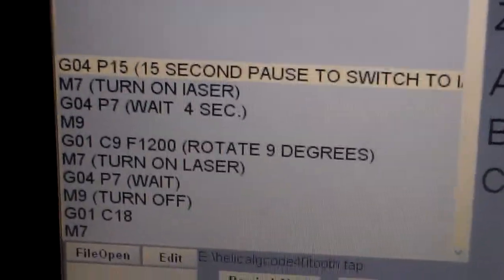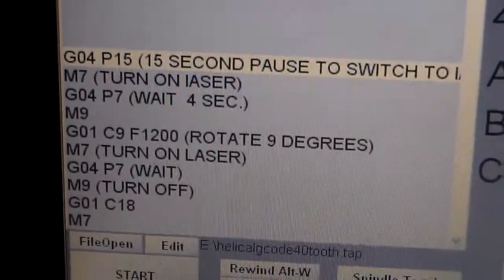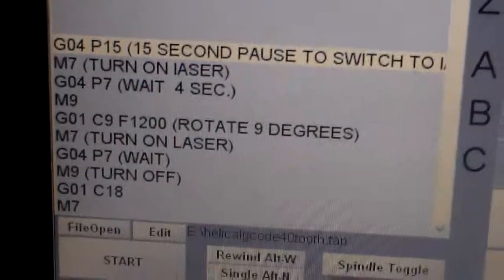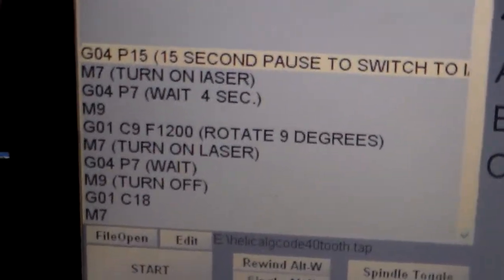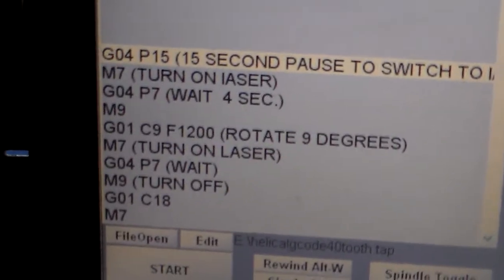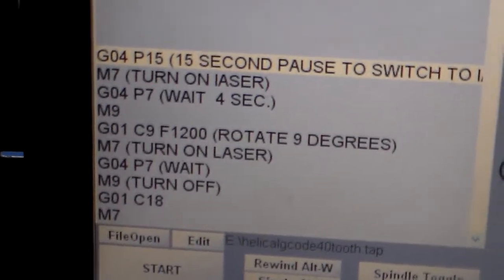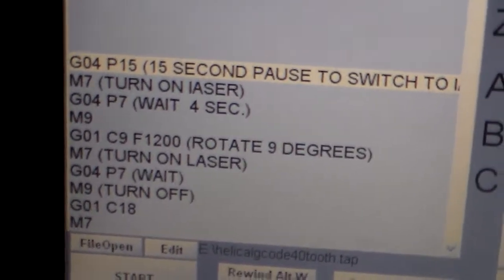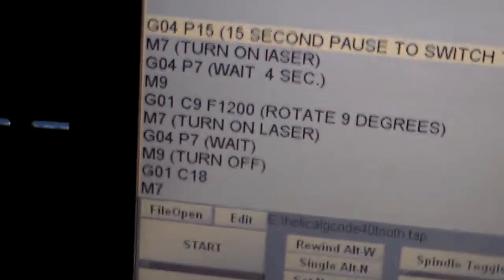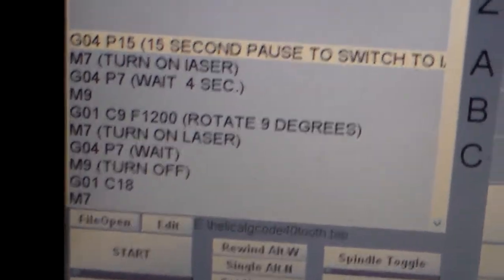And then the G01C9 is the first position that it will cut at, which is 9 degrees, because it's a 40-tooth gear. You need 9 degrees between each step, and then that repeats on down with the M7, G4, and M9 again. I'm going to pause again, and I'll show you the laser.